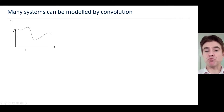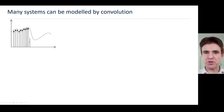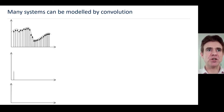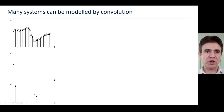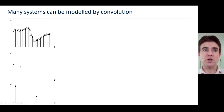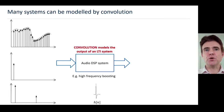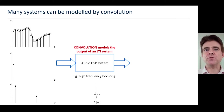A signal or function can be represented or built up using delta functions — these spike-like functions. In general, we need them very closely spaced together. We can decompose the envelope of a function into different building block delta functions. Here I'm showing two of those delta functions used to synthesize or compose this function, and I'm going to show what happens when we put those into a system modelled by convolution.